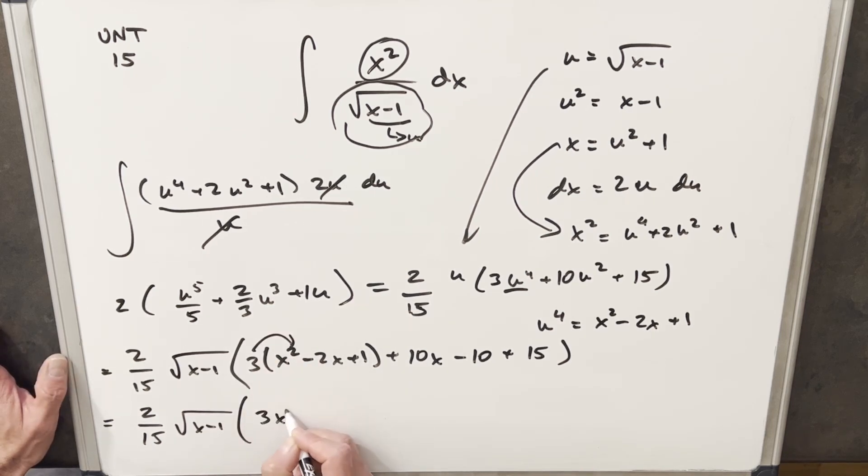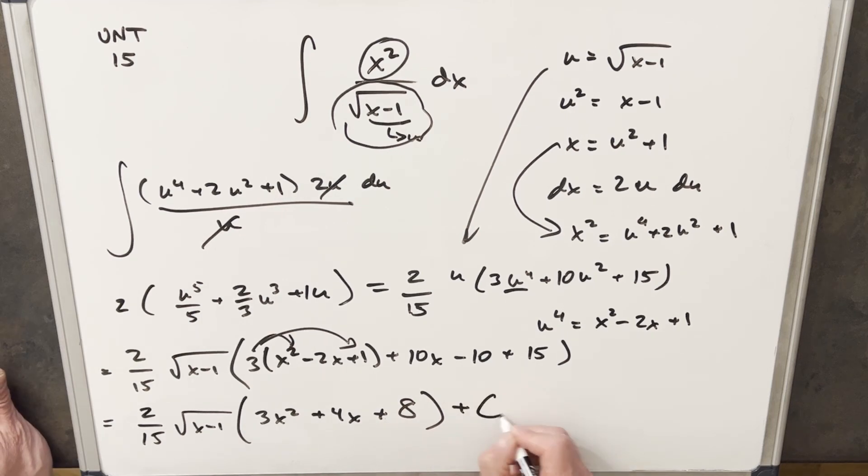Now we're going to multiply this thing out. So we're going to have, here we're going to have 3x squared. Sorry, 3 times minus 2x is minus 6x plus 10x. So we're going to have a 4x here. 3 distributed into the 1. So we're going to have 3. Actually, so 15 minus 10 is 5 plus 3 here. And this is going to give us 8. I'll just tack on a plus C, because that's required. And that's it.